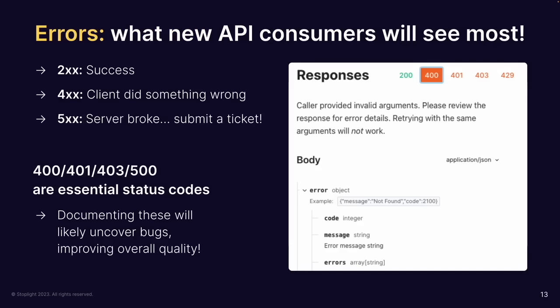We really need to embrace the importance of status codes. Documentation is the first thing a developer looks at to learn how to use an API, and their first interaction is pretty likely to produce an error because they don't know how to use it yet. So it's essential that we describe what happens in cases that are not 200. 200-class is success, 400-class means the user did something wrong, 500-class means the server did something wrong.